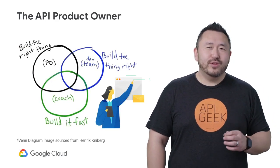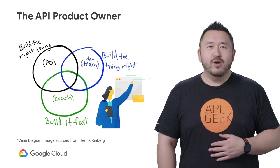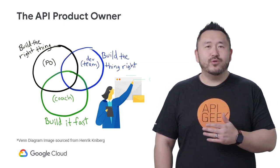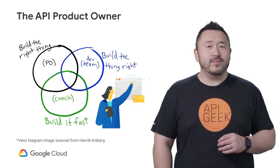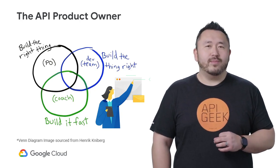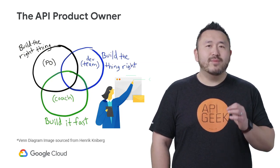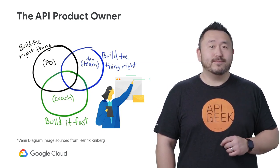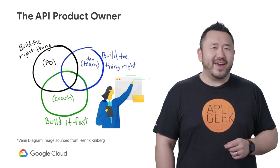Hello. Let's talk about one of the most important roles of an API program in Agile: the API product owner. In Agile, the product owner is a central role within the team and the program. A great Venn diagram, courtesy of Henrik Nieberg, positions the product owner role in the middle of three responsibilities: build the right thing, build the thing right, and build it fast.